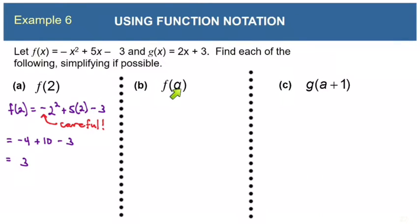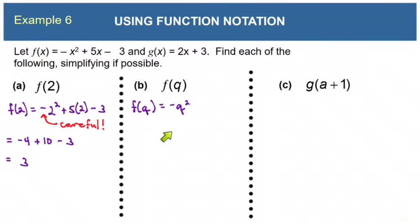Now let's look at f of q. We don't have to plug in a number — we can plug in another expression. We'll take our f function and put a q in the place of x, giving us negative q squared plus 5 times q minus 3. If there were any simplifying to do, like combining terms or distributing, we would do it, but this expression cannot be simplified, so we move on.